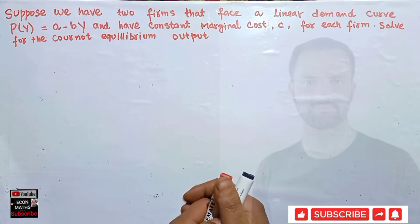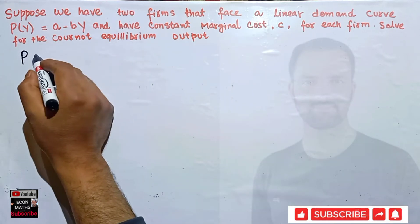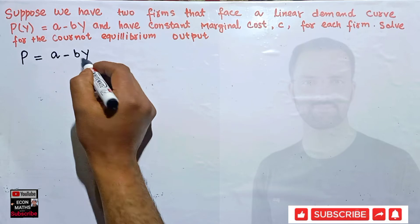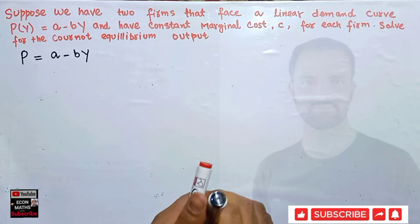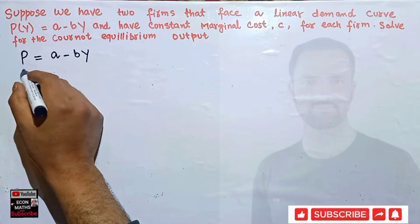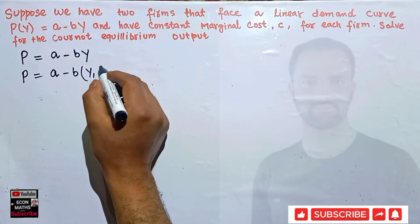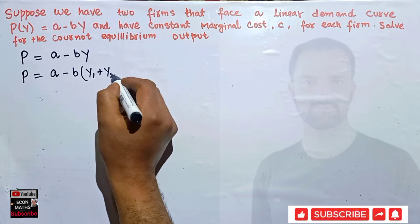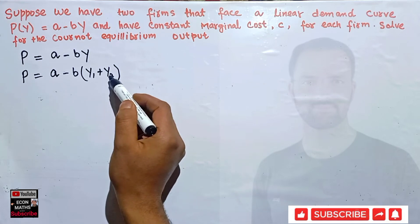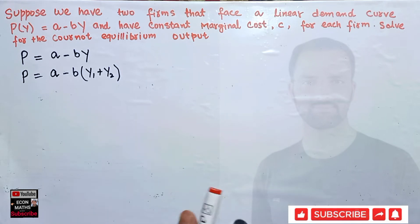To find the Cournot equilibrium output, we first look at the inverse demand curve: P = a - bY. This is our inverse demand function for both firms. We can expand Y as Y1 + Y2, because firm one produces Y1 and firm two produces Y2 — Y is the aggregate of Y1 and Y2. So we write P = a - b(Y1 + Y2) in the Cournot model.